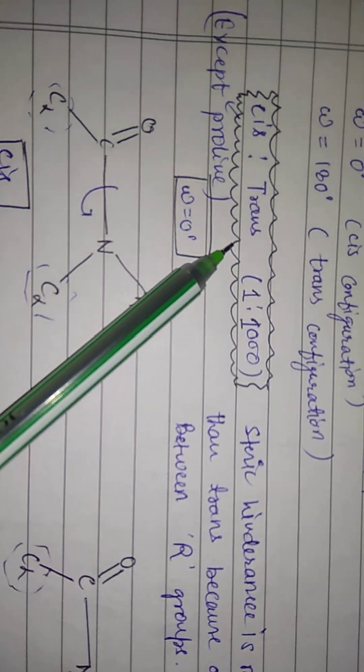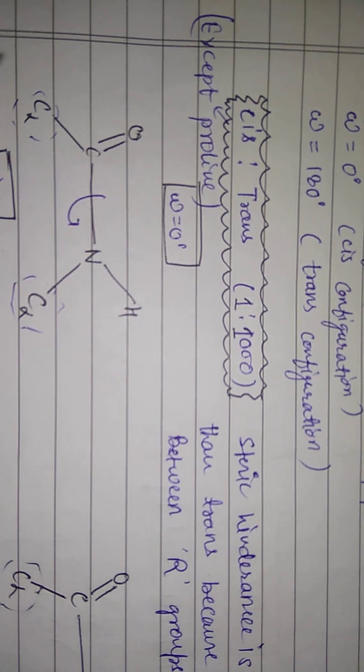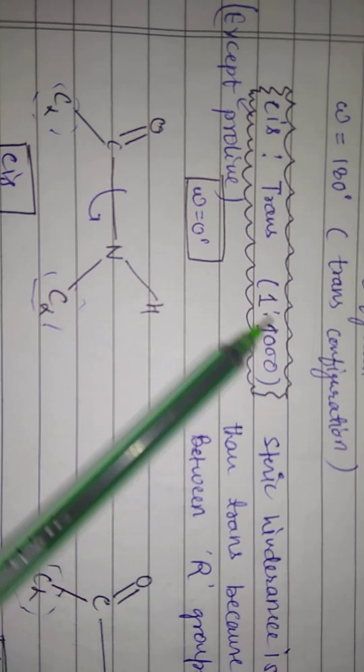This is why cis and trans ratio is 1 is to 2,000. So, this is why we have no such circumstance with proline. In this case, the ratio is less stable.